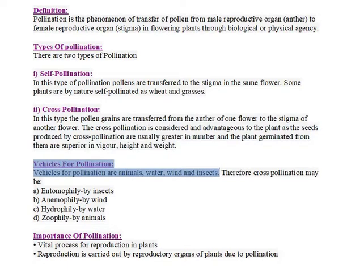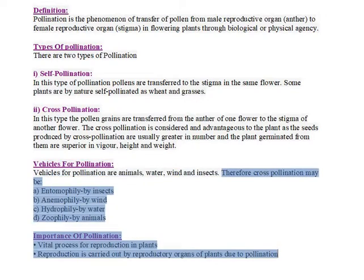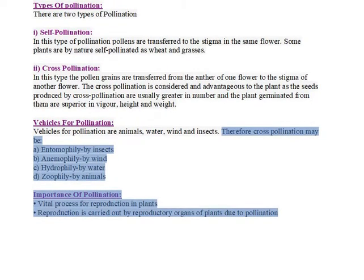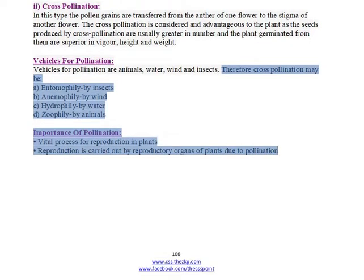Vehicles for pollination are animals, water, wind, and insects. Therefore cross-pollination may be: a) entomophily — by insects, b) anemophily — by wind, c) hydrophily — by water, d) zoophily — by animals.